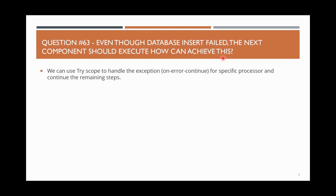For example, in your flow you have a database module inserting records in the middle of the flow. Even though it fails, you want to continue to the next processor. Normally, when there is a failure it goes to error handling and stops the flow.